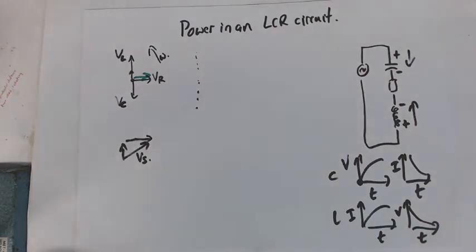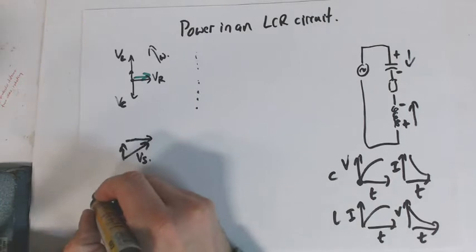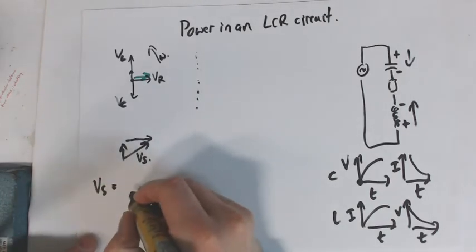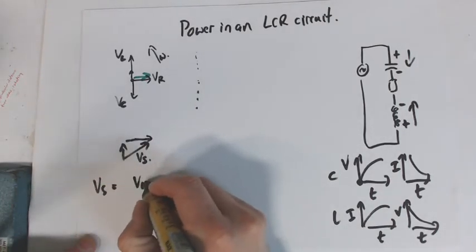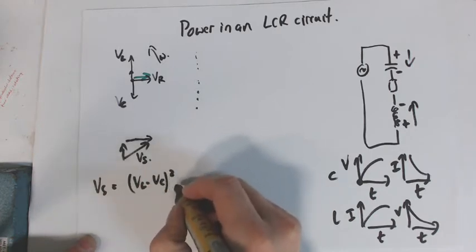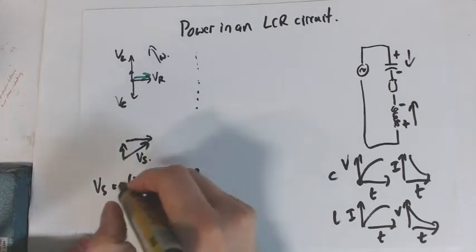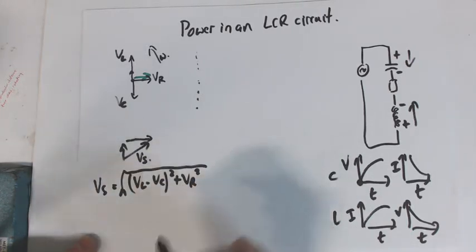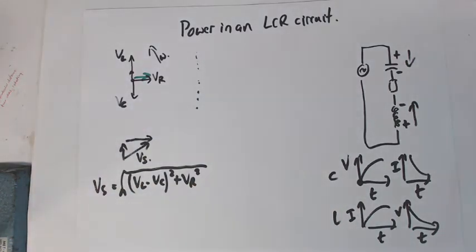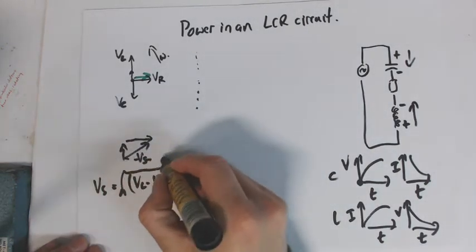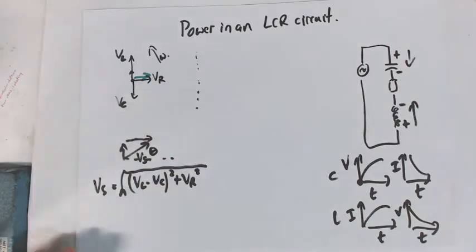So when we actually are working out the Vs we can say Vs is equal to square root of Vl minus Vc squared plus Vr squared. That's just Pythagoras. There is a phase angle and the phase angle is between Vs and Vr.